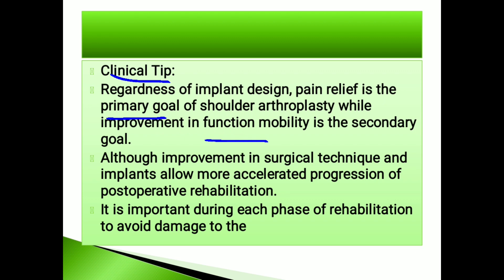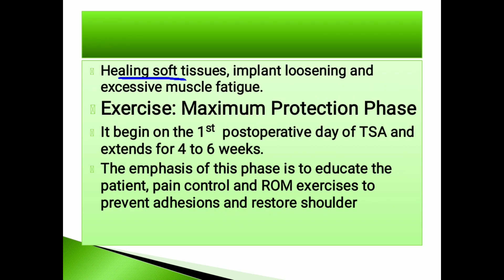It is important during each phase of rehabilitation to avoid damage to the healing soft tissues. There are three phases: the maximum protection phase, the control motion phase, and the minimum protection phase. The maximum protection phase begins the day of TSA and extends for four to six weeks post-operatively. The emphasis of this phase is to educate the patient, control pain, and perform range of motion exercises.